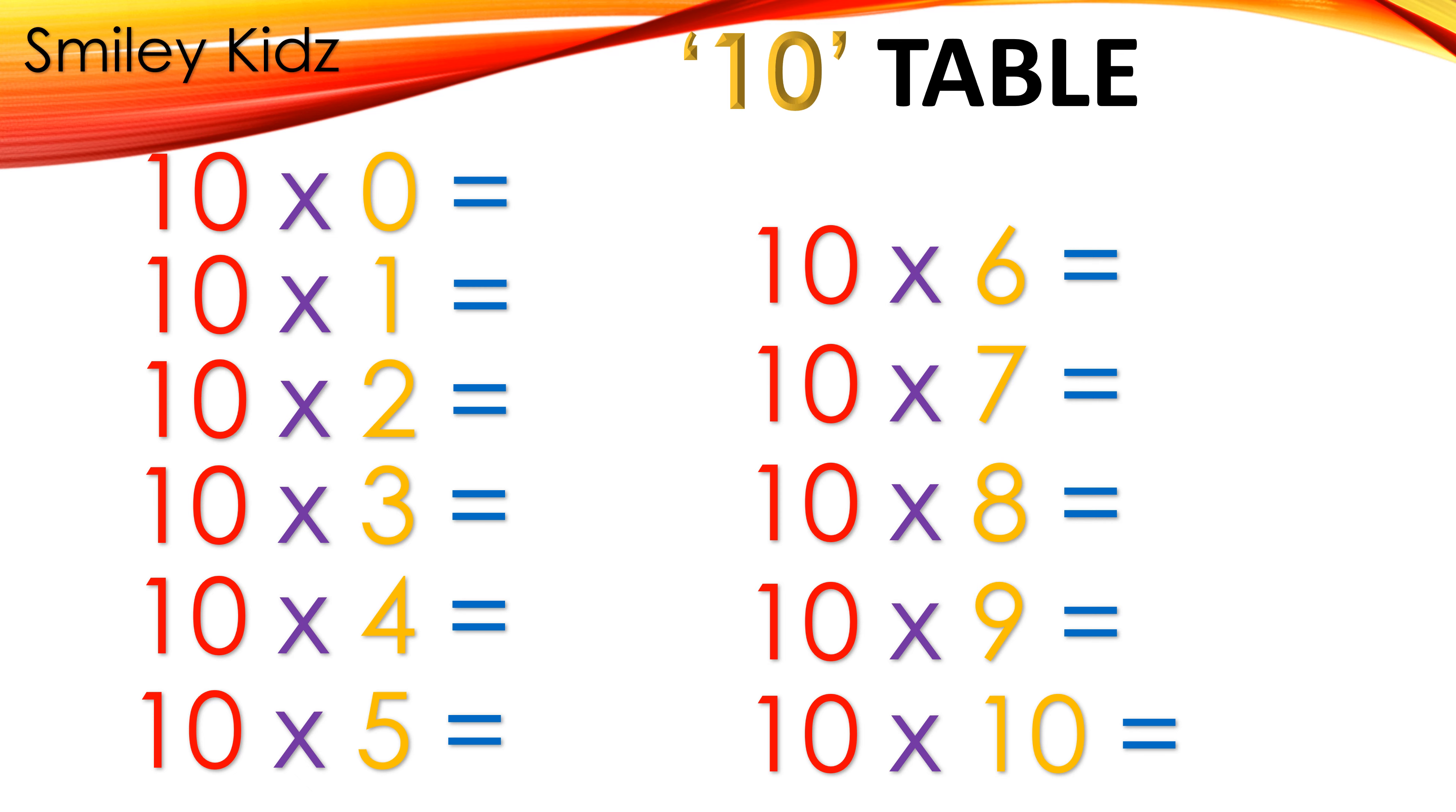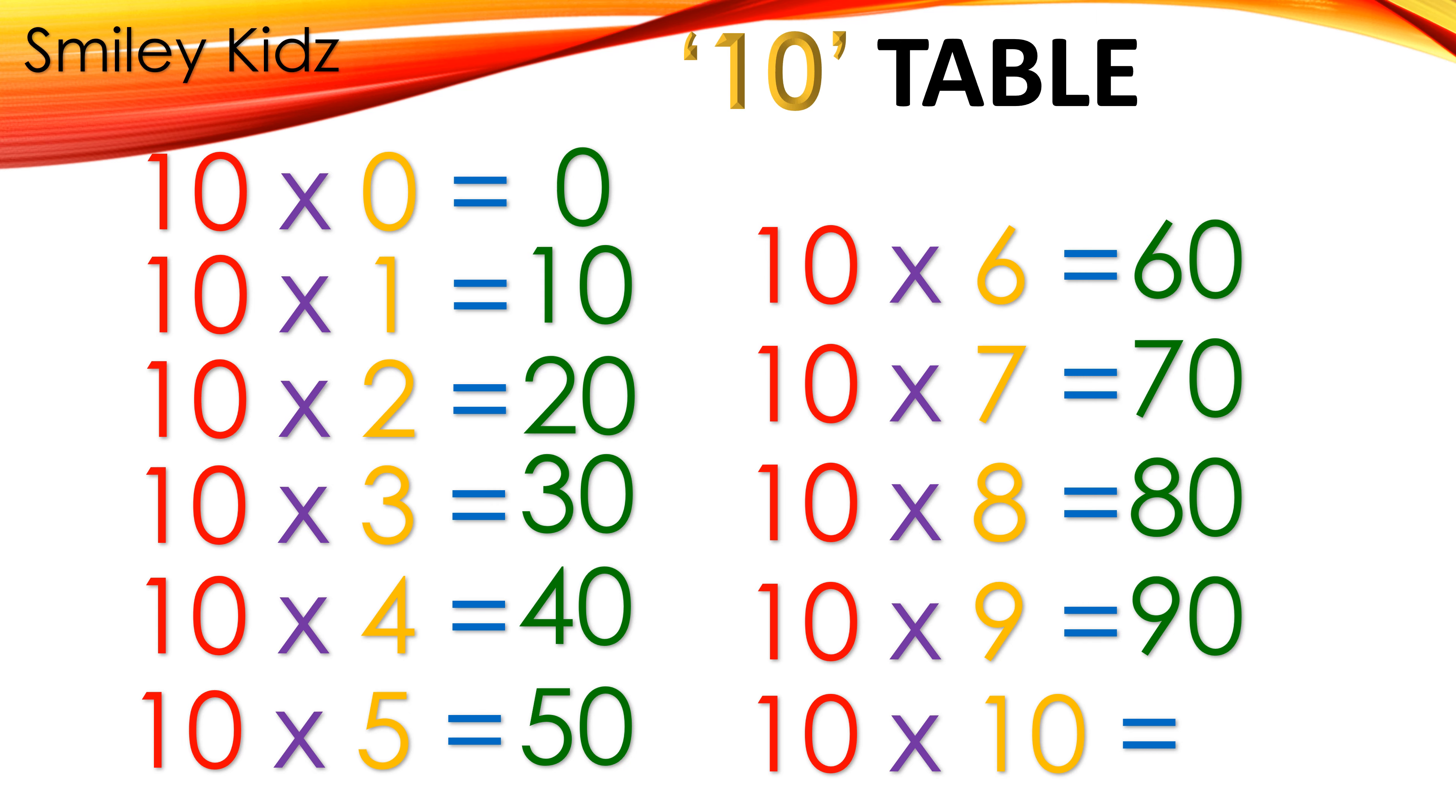10 table: 10 times 0 is 0, 10 times 1 is 10, 10 times 2 is 20, 10 times 3 is 30, 10 times 4 is 40, 10 times 5 is 50, 10 times 6 is 60, 10 times 7 is 70, 10 times 8 is 80, 10 times 9 is 90, 10 times 10 is 100.